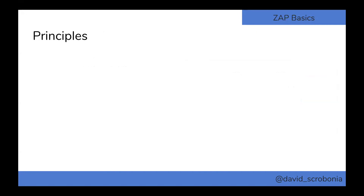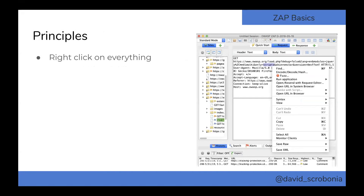Some key principles to keep in mind when using ZAP. The first one: right-click on everything. ZAP is built to have a bunch of information and functionality hidden in these context menus. For example, if you highlight a parameter in an intercepted request and right-click on it, it provides a different context menu — it'll show the fuzz feature and customize the menu to give you more functionality for that specific parameter.